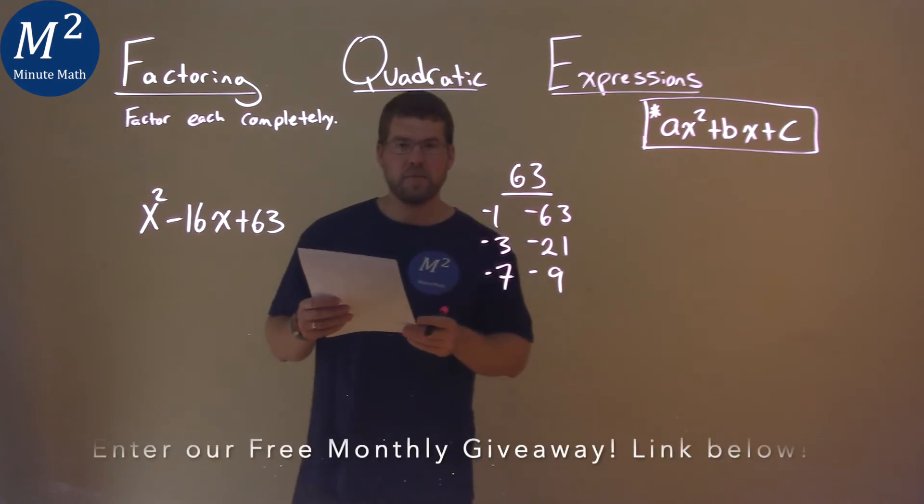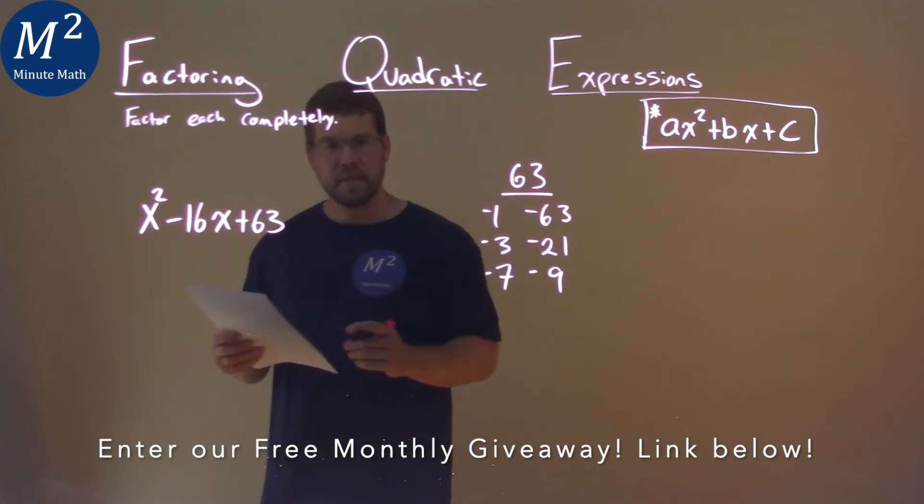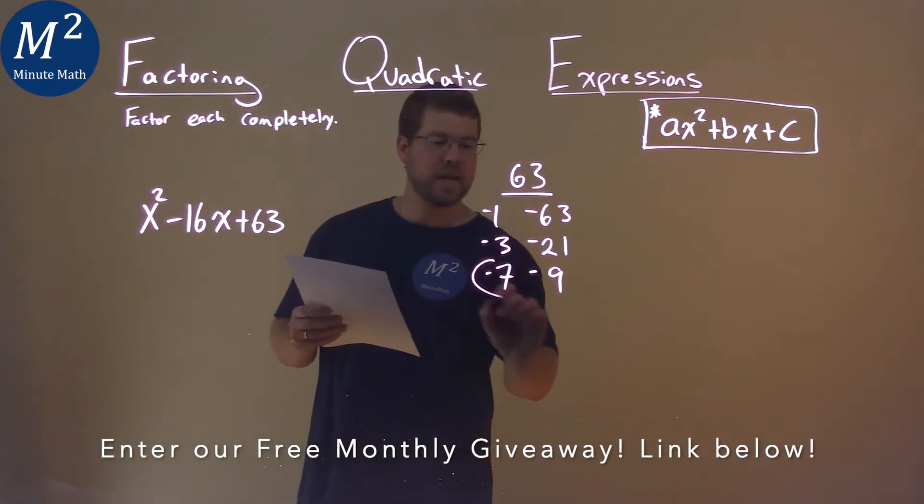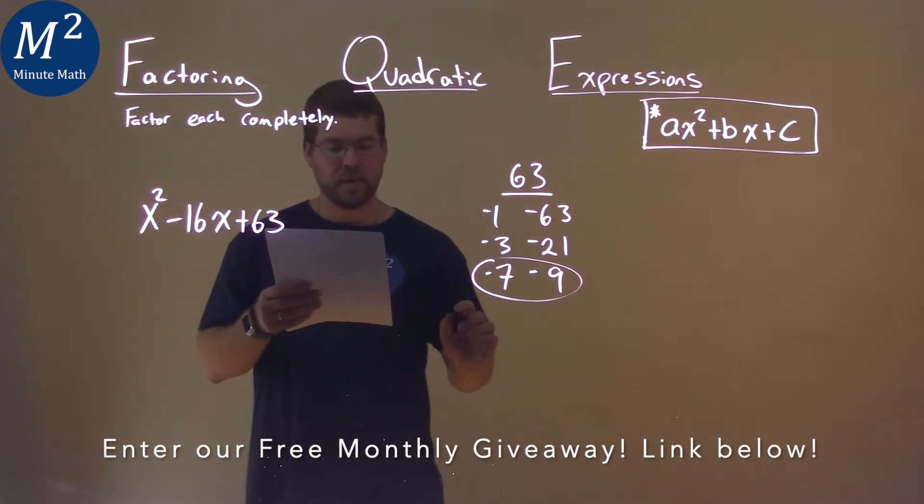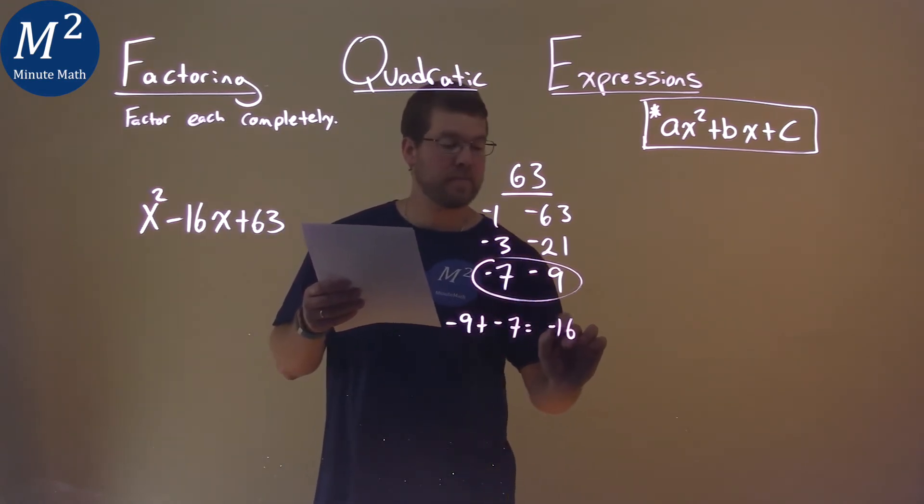Now I'm going to ask myself, what two numbers, when added together, equal a negative 16? And that's actually negative 7 and negative 9. Negative 9 plus a negative 7 equals a negative 16.